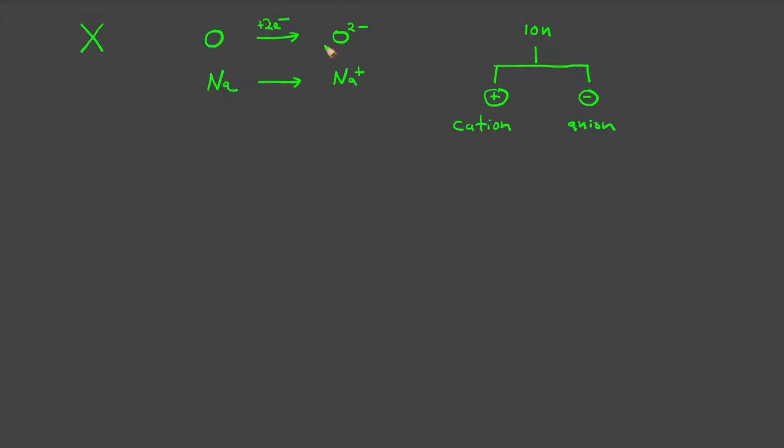So that stands to reason, oxide ion has two more electrons than an atom of oxygen. Likewise, sodium which went to a positive one charge must have lost one electron. Sodium ion has one less electron than an atom of sodium. And now you see the essence of how charge is formed. Negative charge is formed by gaining an electron, positive charge by losing an electron.